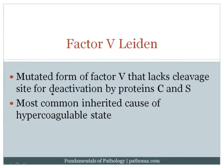The next disorder is factor V Leiden. In this condition, patients have a mutated form of factor V that cannot be cleaved by protein C and protein S — it lacks the cleavage site for deactivation. This results in an inability to shut off factor V, leading to excessive factor V activity, which can lead to a hypercoagulable state. Factor V Leiden is the most common inherited cause of a hypercoagulable state.